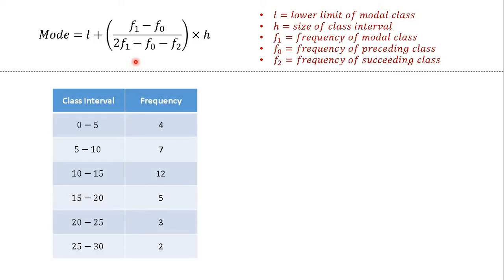So here is an example of a grouped data. We have class intervals and the frequency of the data falling in its intervals. We can clearly see that the highest frequency is 12.